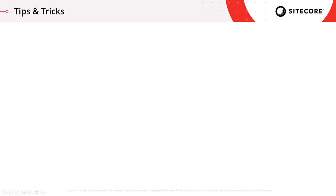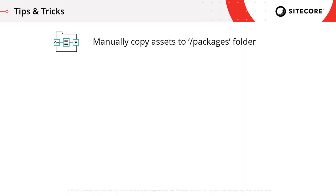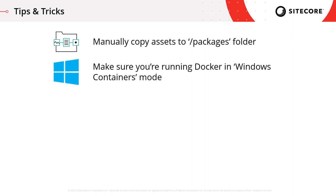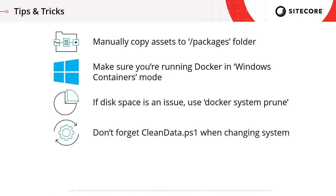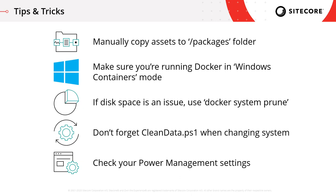Let me finish up with a few tips and tricks to get you started. If you don't want to wait for all packages to download from dev.sitecore — maybe you've already got them downloaded somewhere — you can manually copy those into a packages folder at the root of the Docker Images repository, and then it'll skip the download step. As we're building Windows images, you also need to make sure you're running Docker locally in Windows containers mode — it won't work if you're running in Linux mode. If disk space is becoming an issue after building all these images, don't forget you can use docker system prune to clean up all the dangling intermediary images and free up disk space. Also, don't forget to run cleanData.ps1 when changing systems — if you don't, database and index files will remain from the previous system and the new system won't function properly. Finally, it might be a good idea to check your power management settings if you intend to walk away from your machine while the build is being executed — you don't want your machine to shut down halfway through due to a lack of user activity.